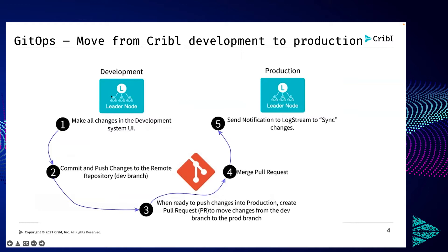From a high level, I'll go through five steps. The UI on the left represents Cribl development — a full installation with a leader node and workers. The one on the right represents a Cribl production environment, most likely a full set of Cribl worker nodes and a leader node. The middle UI here is GitOps as the integration point. We'll cover: changing Cribl configuration, committing changes to the remote repository, merging from one branch to another in GitOps, and finally having the Cribl production leader node synchronize the data from GitOps.